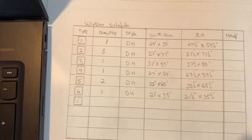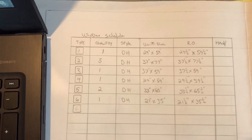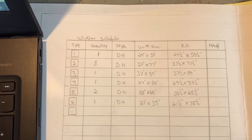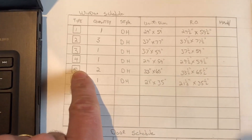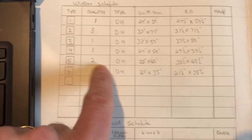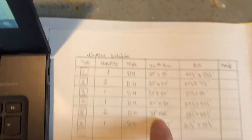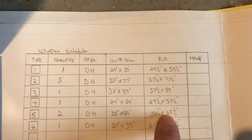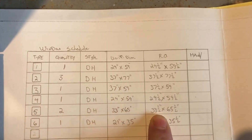The architect many times will place a door and window schedule for you to read. In the schedule you'll see the unit dimension and the rough opening. When we're framing, the rough opening measurements are what we want.